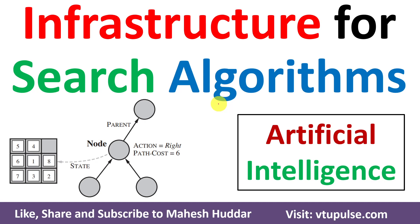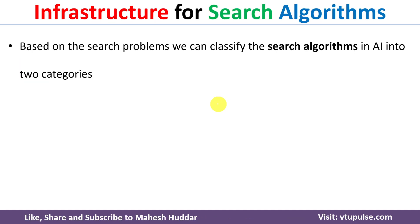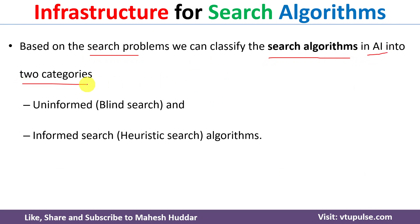Welcome back. In this video I will discuss infrastructure for search algorithms in artificial intelligence with the help of simple examples. Based on the search problem, we can classify search algorithms in AI into two categories: the first one is uninformed, also known as blind search algorithms, and the second one is informed search, also known as heuristic search algorithms.